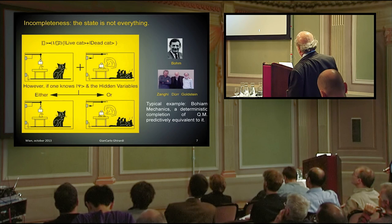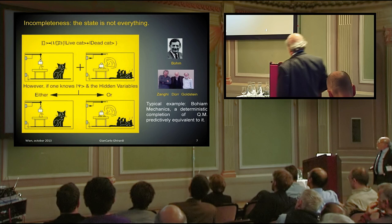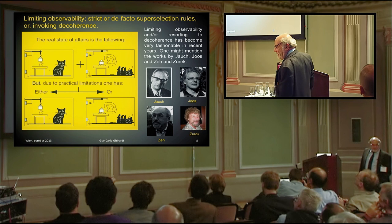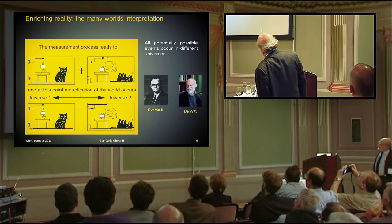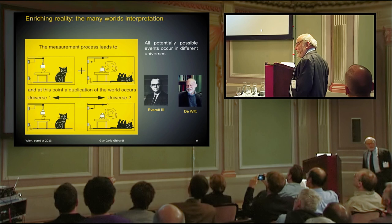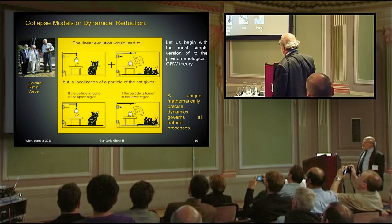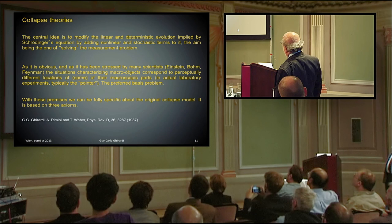I mentioned very briefly some of the solutions which have been proposed. Incompleteness, the state is not everything. This is Bohm, and Professor Haile, and recently Zanghi, Dürr, and Goldstein have worked a lot on this. Limiting observability. Here also we have a long history which goes back to Jauch, even before to Daneri, Langer, Prosperi. Then we have Joos, Zeh, and Zurek. And I don't want to comment about decoherence. And reaching reality is the many-worlds interpretation. All potentially possible macro-events occur in different universes. And here I have Everett and DeWitt. Then I have the collapse model due to myself, Rimini and Weber, John Bell, and Philip Pearle.